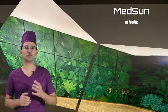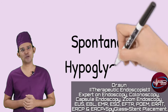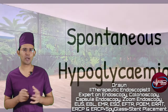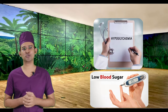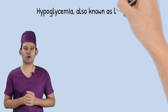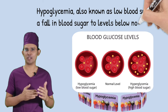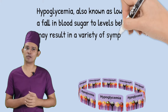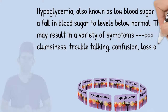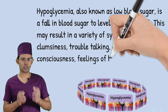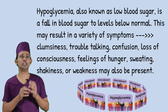Hello and welcome. I'm Dr. San. Today I'm going to talk about spontaneous hypoglycemia. Hypoglycemia, also known as low blood sugar, occurs when the blood sugar level falls below normal. It causes a variety of symptoms including clumsiness, trouble talking, confusion, and loss of consciousness.